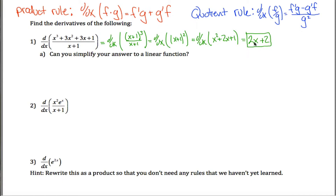This is the same solution you'd get using the product rule at that stage, recognizing x plus 1 squared as x plus 1 times x plus 1. There's also something called the chain rule that makes this even easier, but since we haven't learned that yet, I'll refrain from mentioning it. So that's one way — and you can simplify the answer into a linear function.